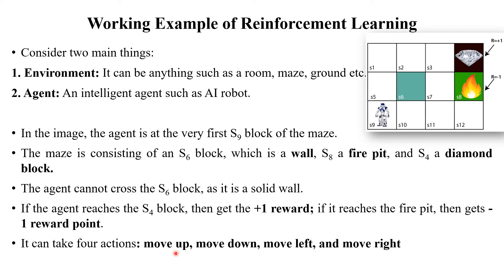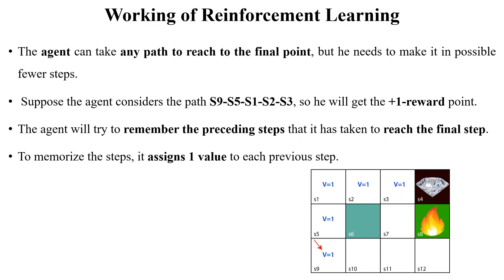The agent can take four actions: move up, move down, move left, and move right. Many online games use this kind of mechanism. The agent can take any path to reach the final point, but it needs to do so in fewer steps — not a long path. The agent tries to remember each and every step to reach the final destination. This is reinforcement learning.